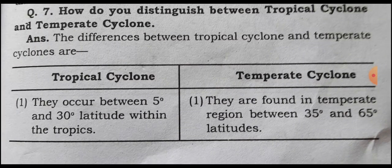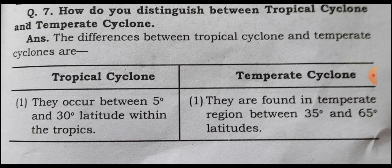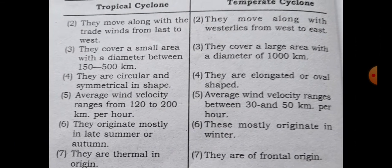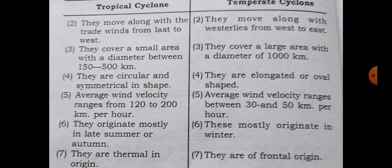The third question is: how do you distinguish between tropical cyclone and the temperate cyclone? Two columns are given here — one is tropical cyclone and one is temperate cyclone. Number one: tropical cyclones occur between 5 to 30 degree latitude within the tropics. Temperate cyclones are found in the temperate region between 35 and 65 degree latitude. Number two: tropical cyclone moves along the trade winds from east to west. Temperate cyclones move along with the westerlies from west to east.